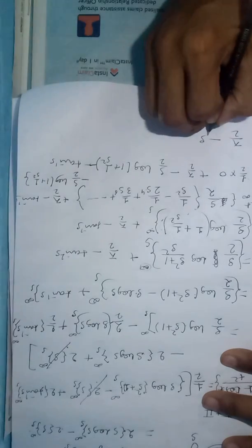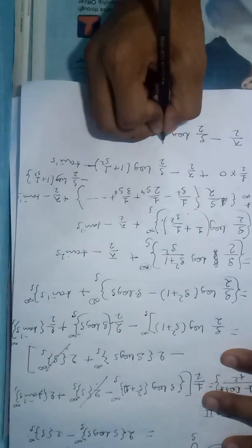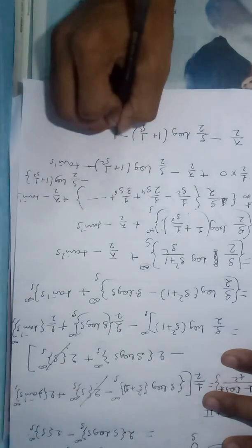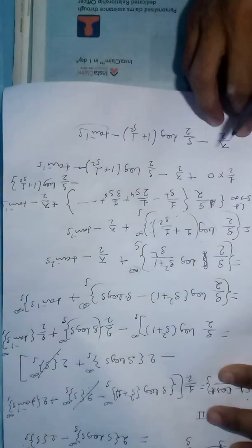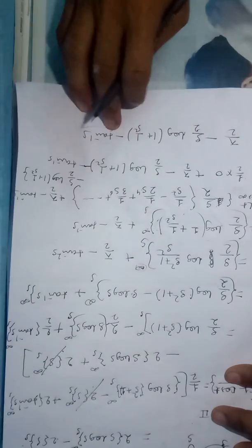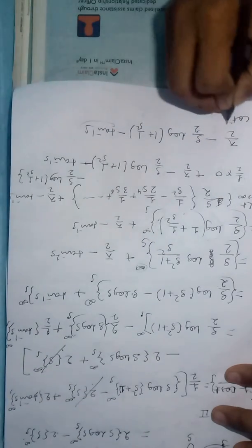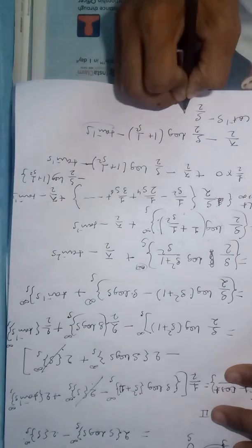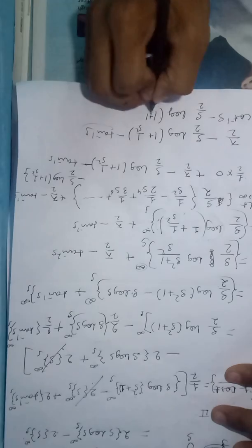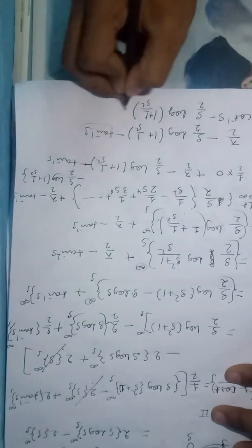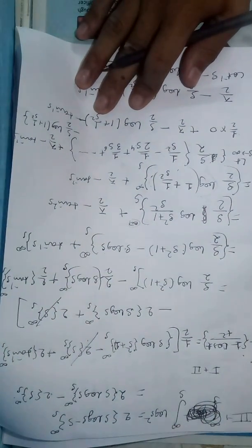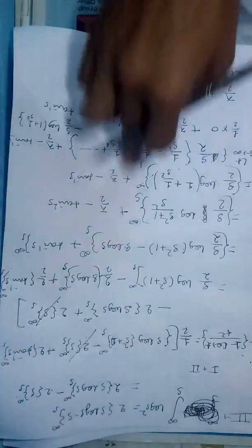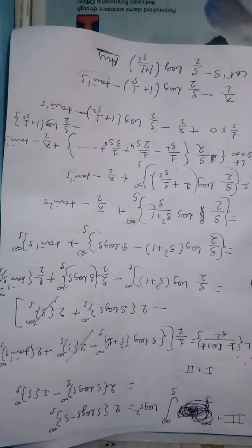Therefore the answer is π/2 − (s/2)·log(1 + 1/s²) − tan⁻¹ s. We can also write π/2 − tan⁻¹ s as cot⁻¹ s. So the final answer is cot⁻¹ s − (s/2)·log(1 + 1/s²). This is our required answer — a very complex Laplace problem solved through repeated integration and log expansion.